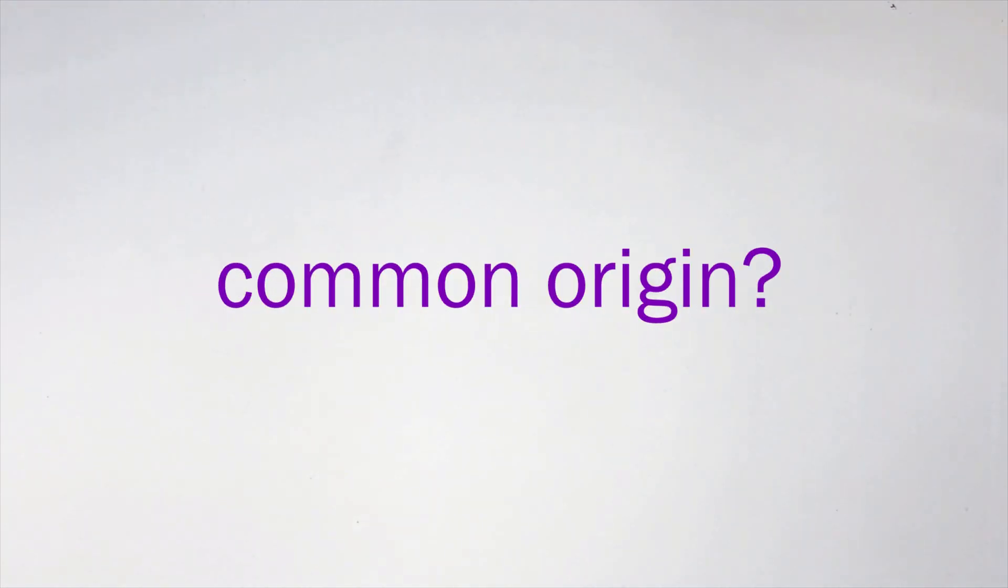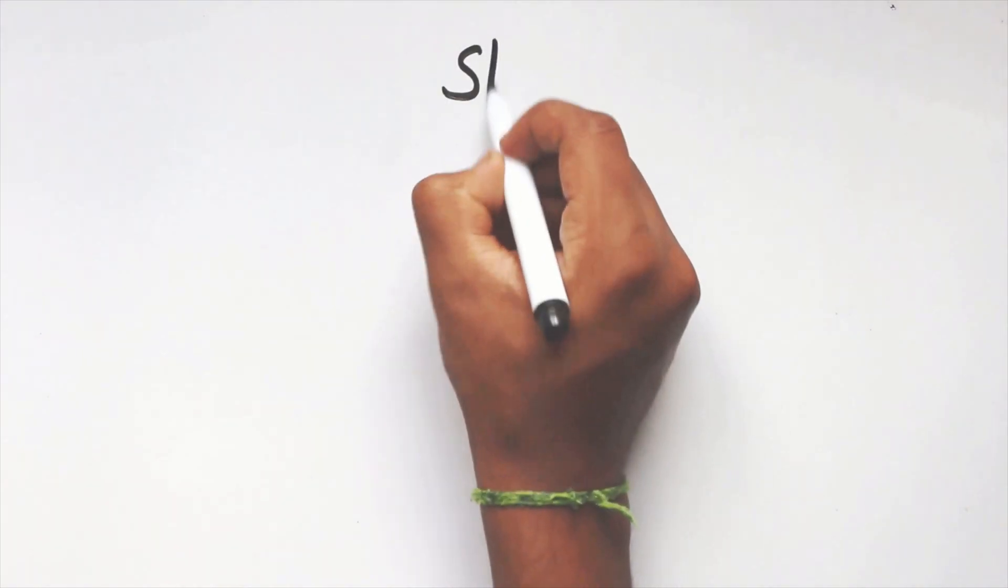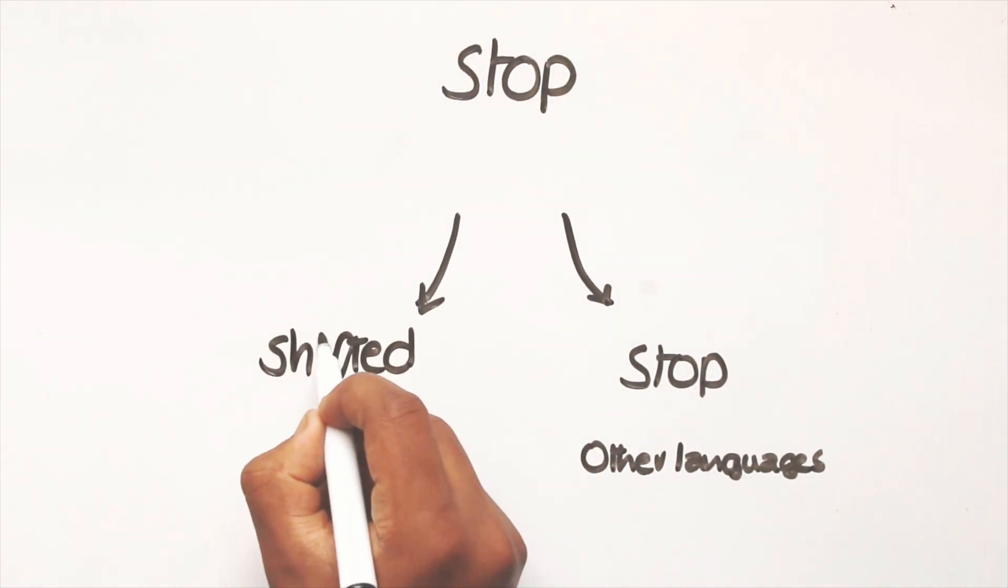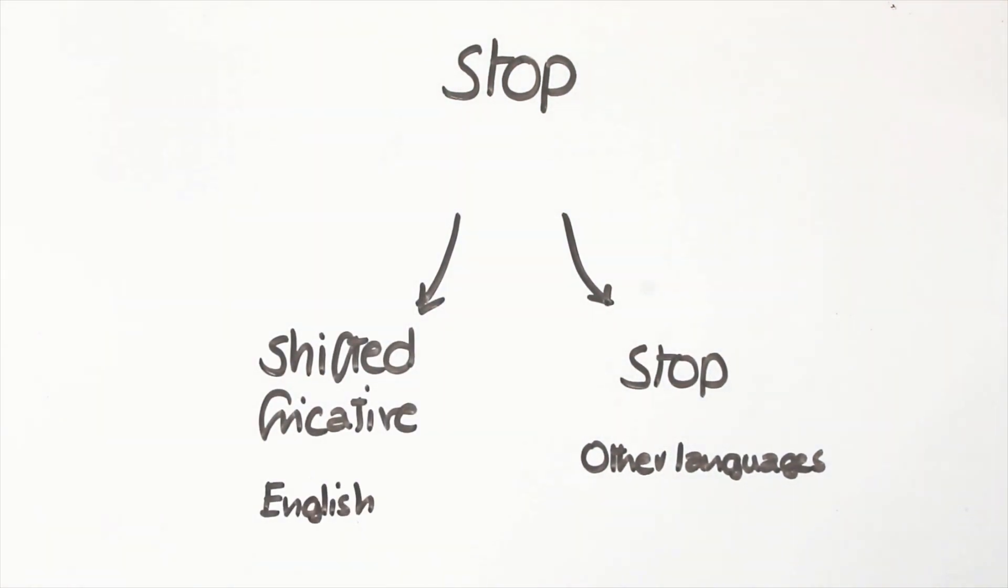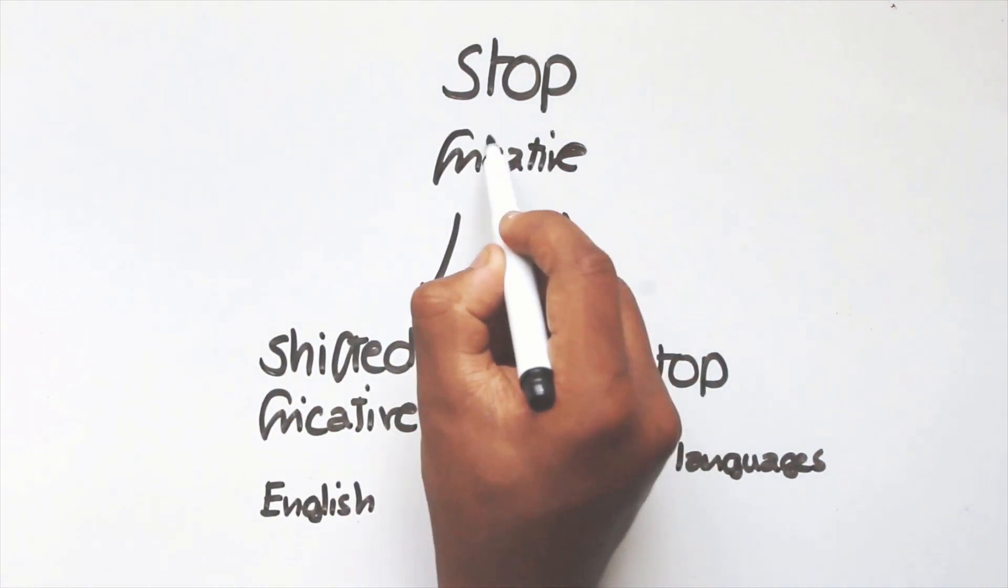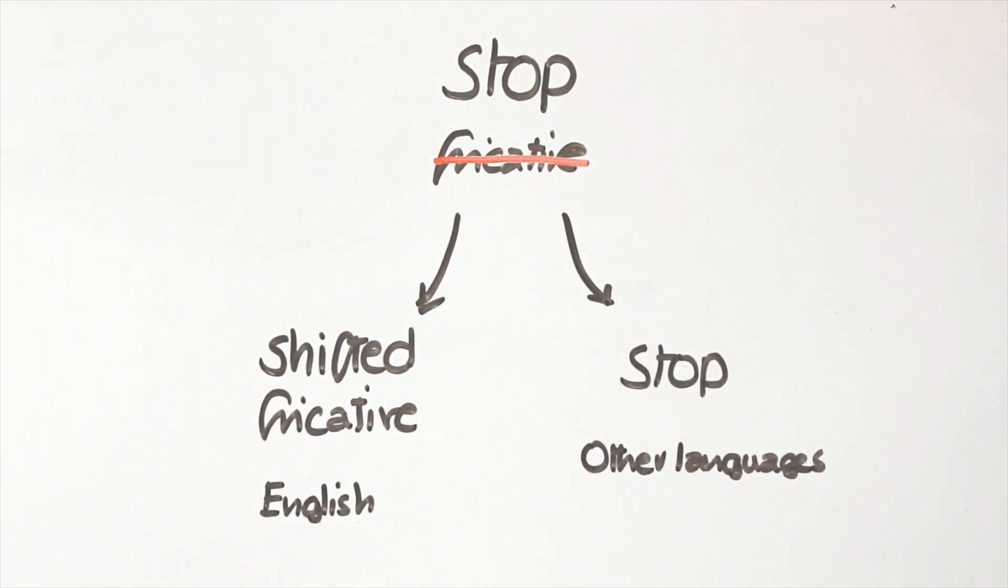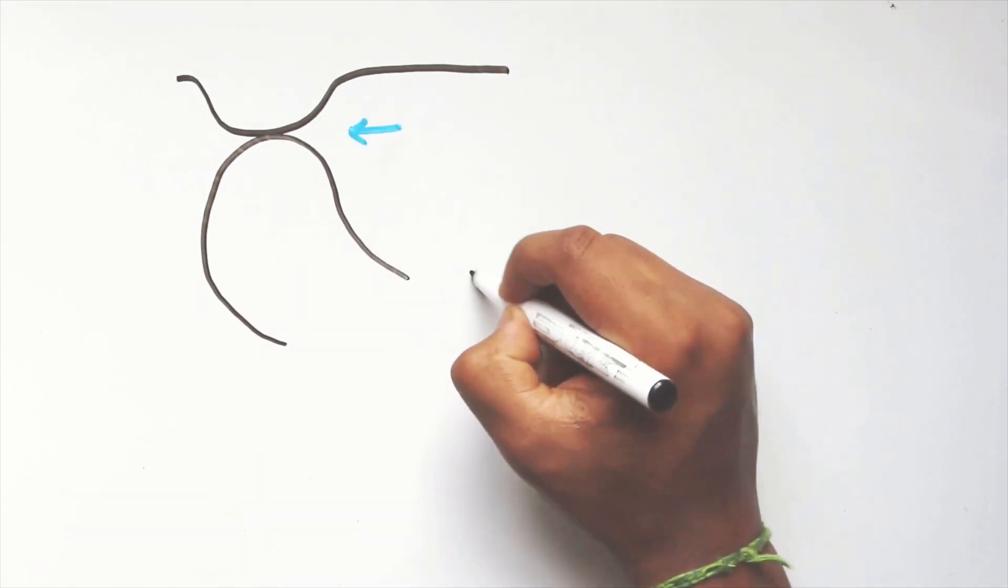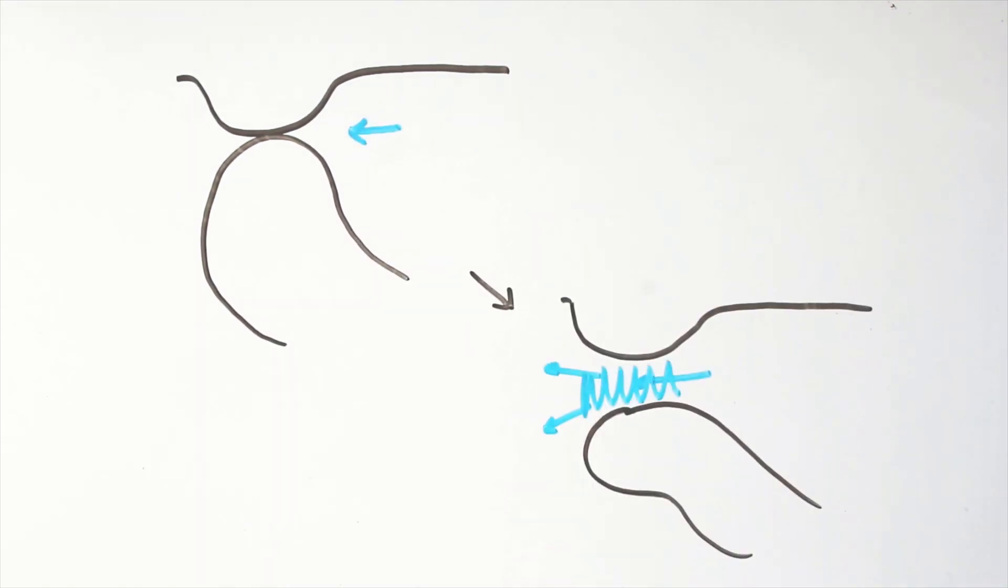Remember when we talked about common origin? Well, this could mean that stops in this original language were preserved in the other languages, but became slightly shifted fricatives in English. An ancestral fricative is much less likely, since stops are more stable than fricatives. The explosive release of a stop has a high chance of developing into a fricative sound, eventually overtaking the stop part.